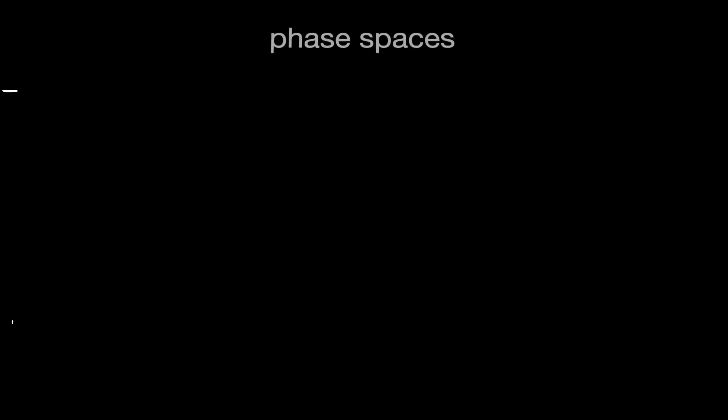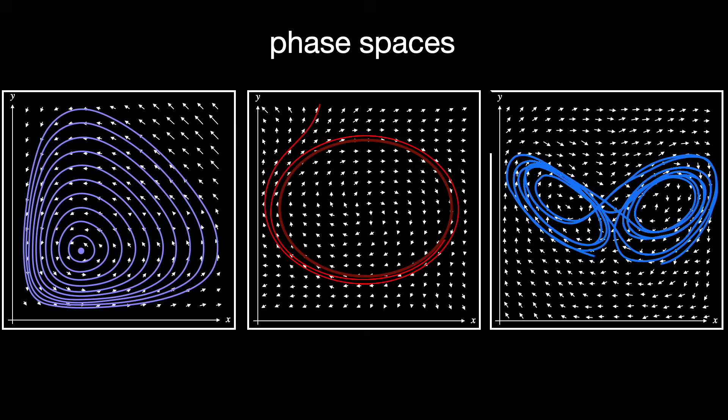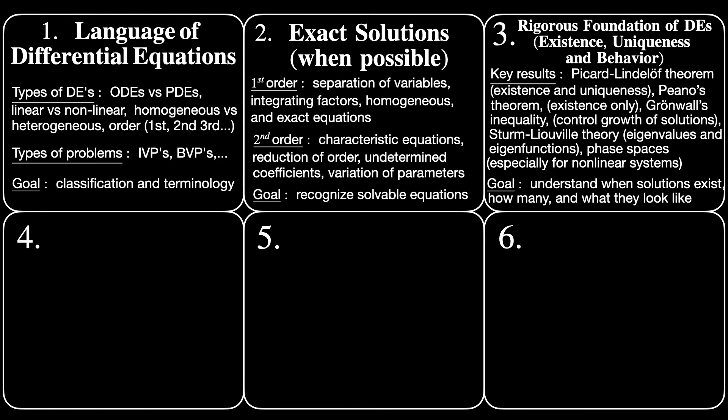Finally, for non-linear systems, phase spaces are particularly important because they allow us to visualize complex behavior like chaos. Instead of solving explicitly, we study the geometric behavior of solutions, such as equilibria, limit cycles, attractors, and so on. These tools tell us what's possible even before we try to compute anything. Of course, we couldn't cover all of the important results here, but if you mastered just the ones we talked about today, you'll be way ahead of most people when it comes to tackling problems in differential equations.